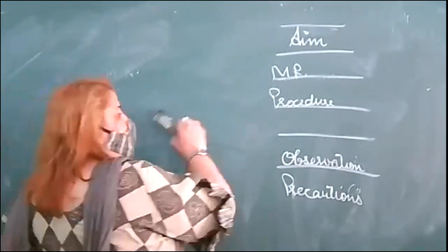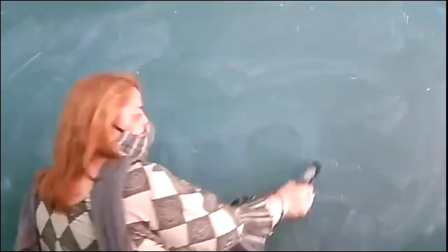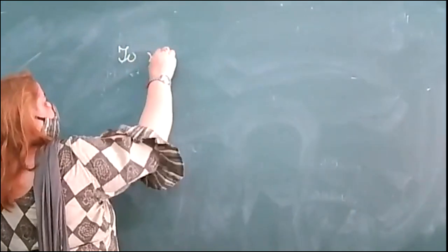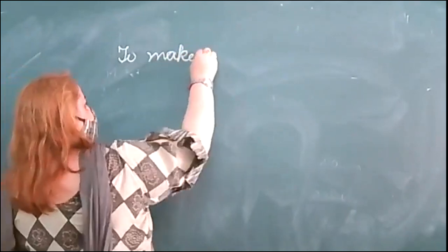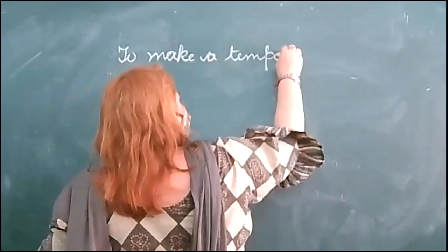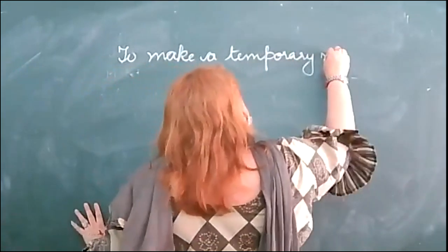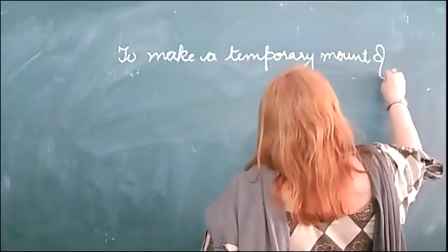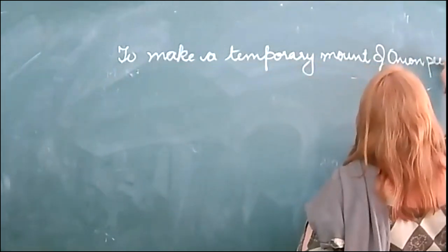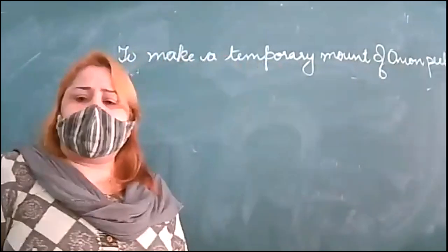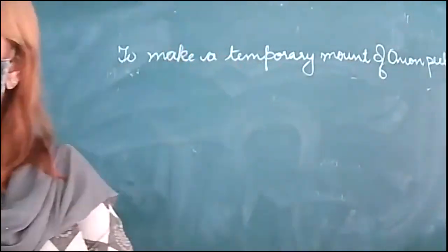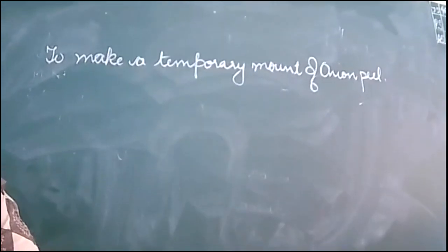I am writing it here. There are two activities — to make a temporary mount of onion peel as well as the cheek cell — but all of you will do only the onion peel.